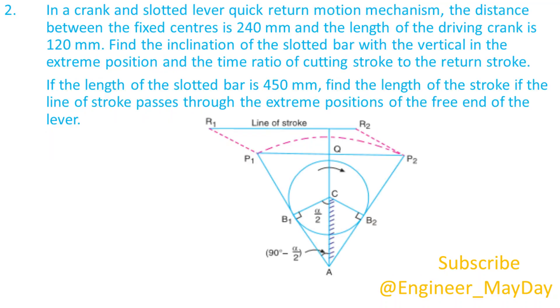Here is a second question. In a crank and slotted lever quick return motion mechanism, the distance between the fixed centers is 240 millimeters and the length of the driving crank is 120 millimeters. Find the inclination of the slotted bar with the vertical in the extreme position and the time ratio of cutting stroke to the return stroke.